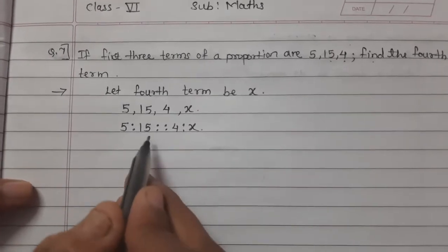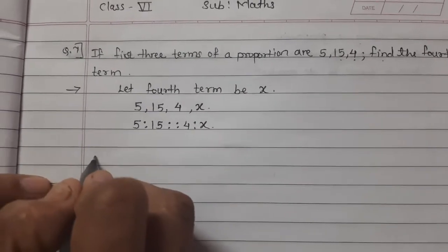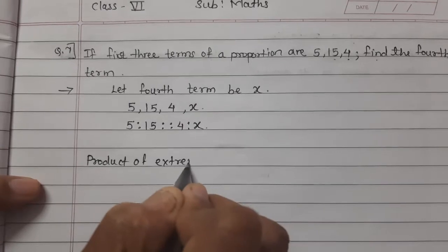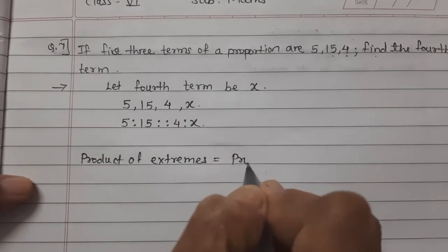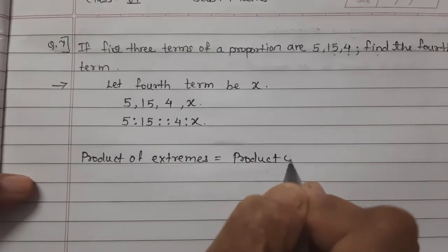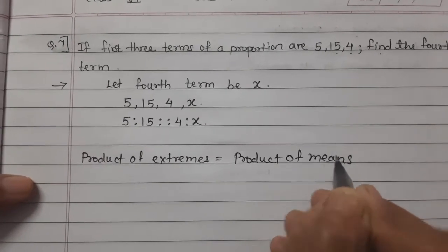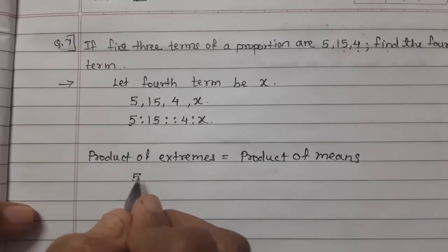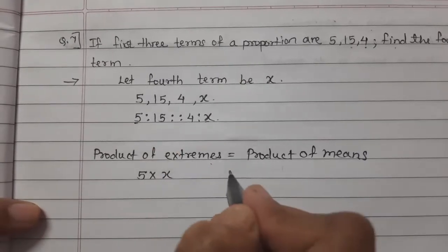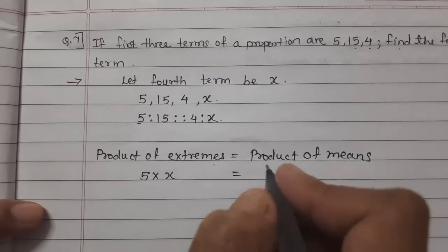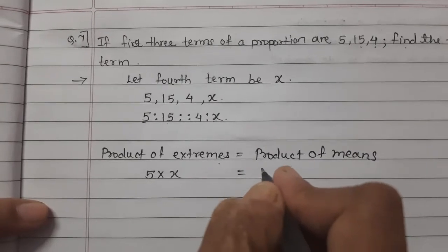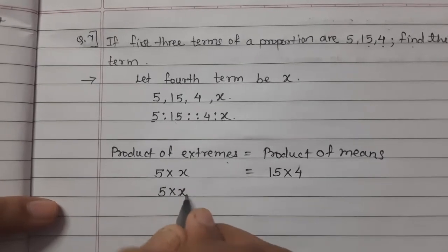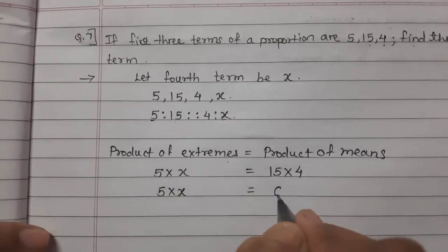Product of extremes is equal to product of means. The extremes are 5 and x, and the means are 15 and 4. So 5 multiplied by x is equal to 15 multiplied by 4, which gives us 5x = 60.